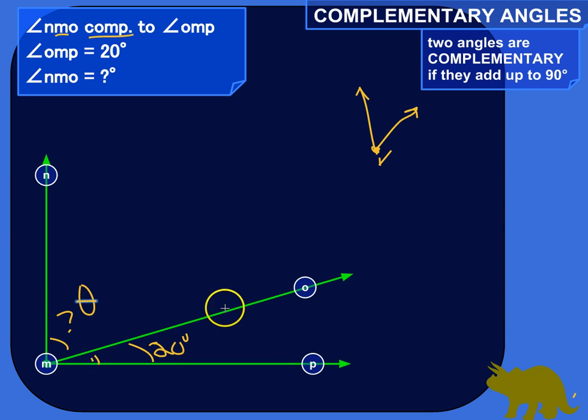So, NMO is complementary to OMP. That means that if you add them up, they'll equal 90 degrees. So, these two together will be 90 degrees. OMP is 20 degrees. And NMO, we don't know. So, we're just going to call that theta. And we'll be able to figure out what is that angle measurement, based on the fact that these two have to add up to 90 degrees, because they're complementary.